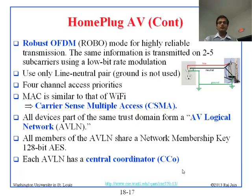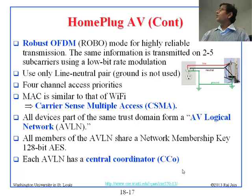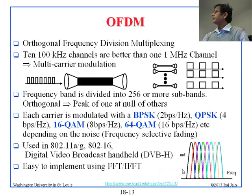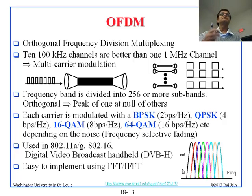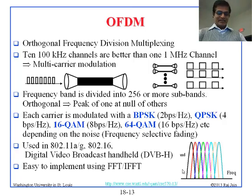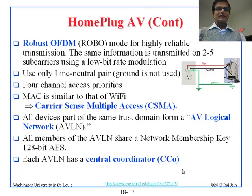Robust OFDM is where you transmit the same thing on two to five subcarriers. You might send the same symbol on three subcarriers in parallel, so you can be very sure that nothing will get wrong. That is robust OFDM — also called ROBO.